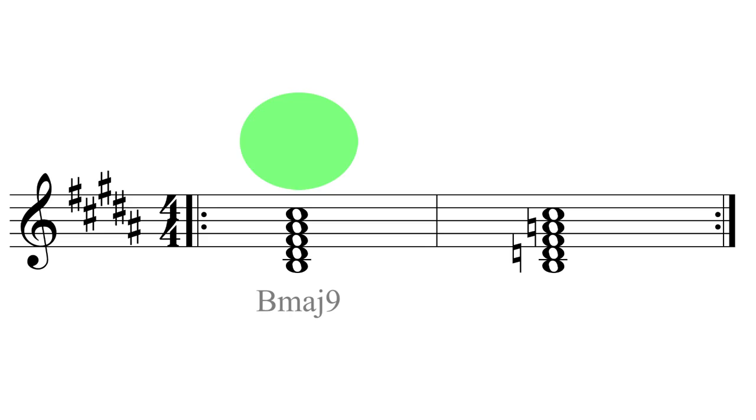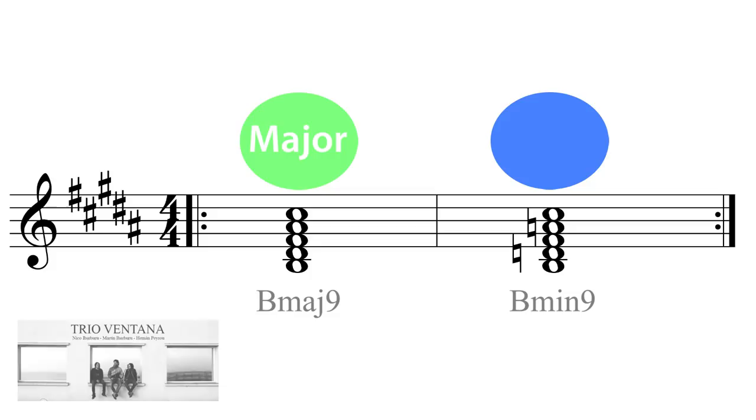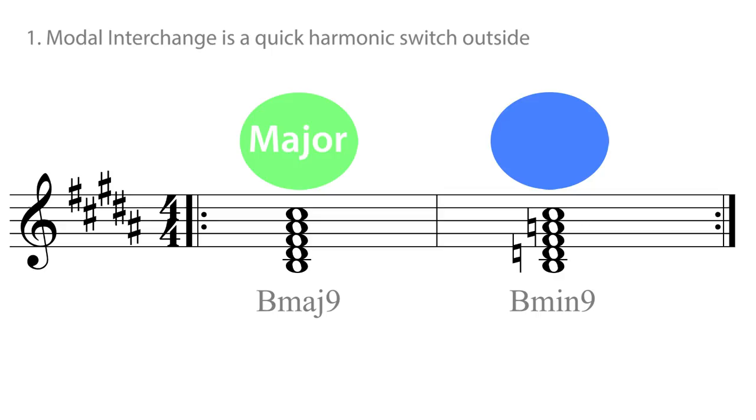what is modal interchange? Modal interchange is a quick harmonic switch outside the key of the piece. The duration is short of this harmonic sidestep, not really long enough to be called a modulation.